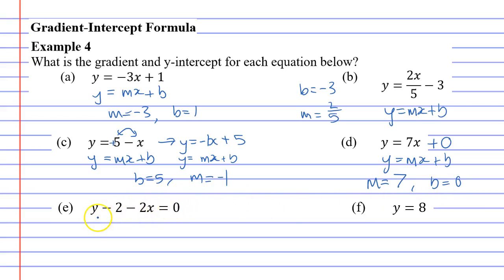Question E now, nothing's in the right spot. So what we can do is fix that by using the rules we learned when we're trying to manipulate equations. For instance, I could add 2x on both sides, which will get rid of this 2x and leave me with y minus 2 equals 2x. I can also add 2 on both sides to get rid of the minus 2, which gives me y equals 2x plus 2. When you look at y equals mx plus b, it matches up nicely. m equals 2, and so does b.